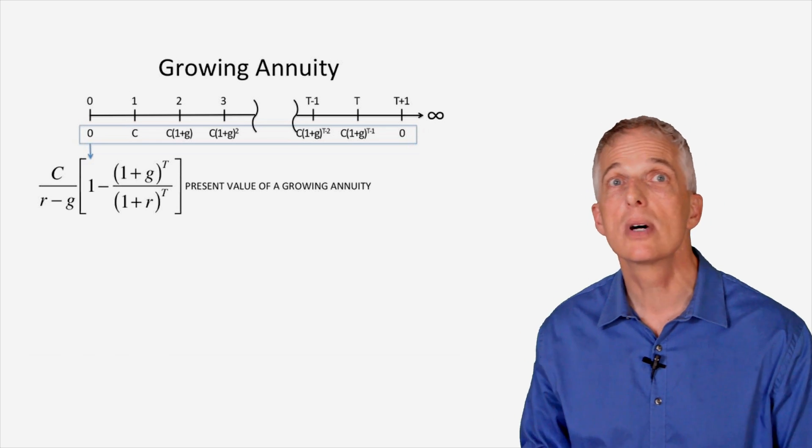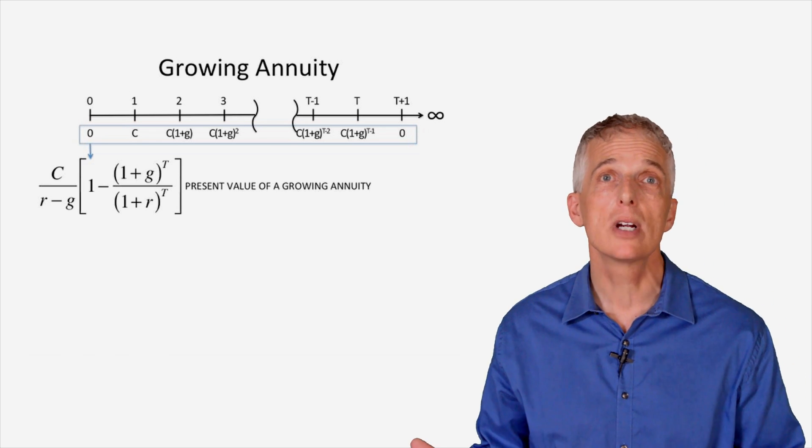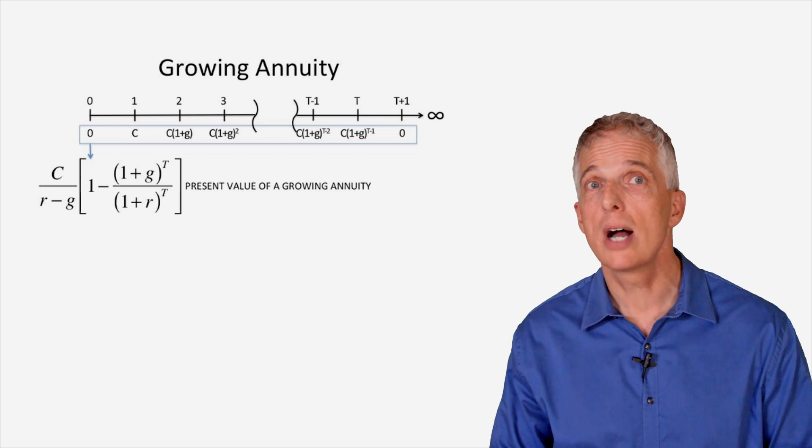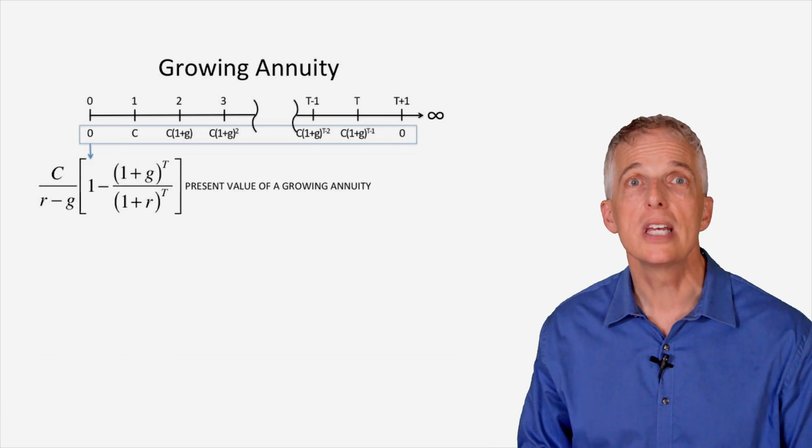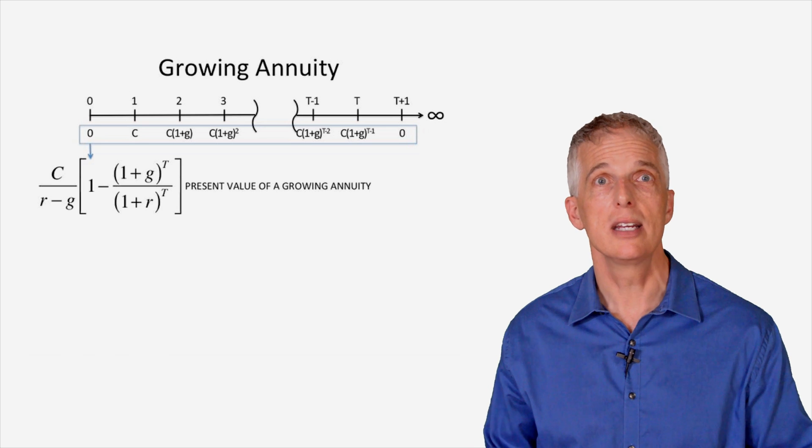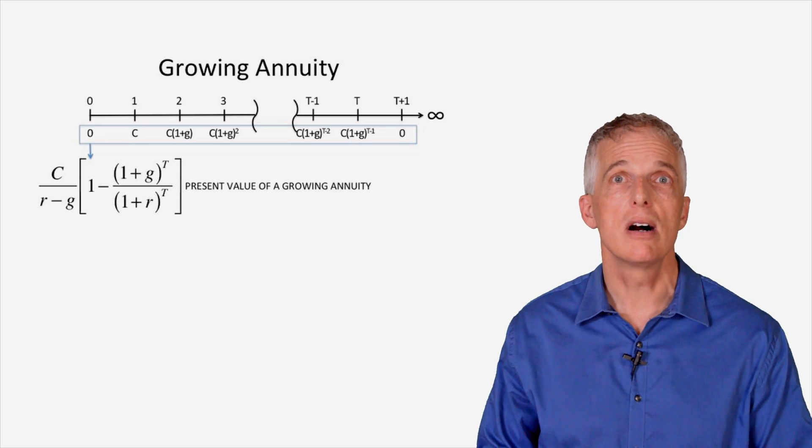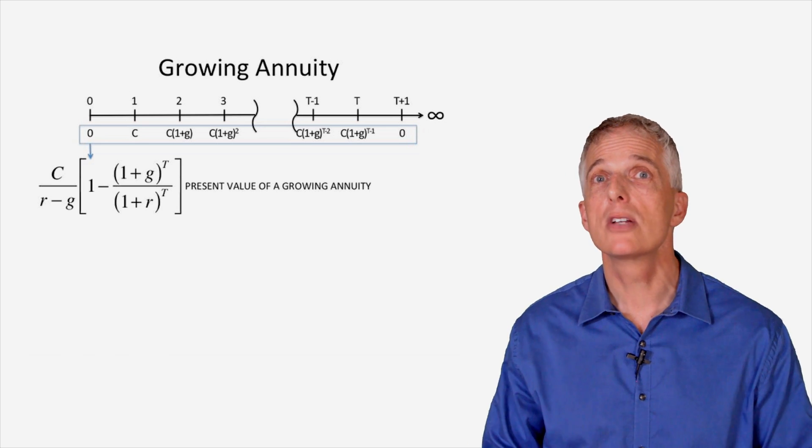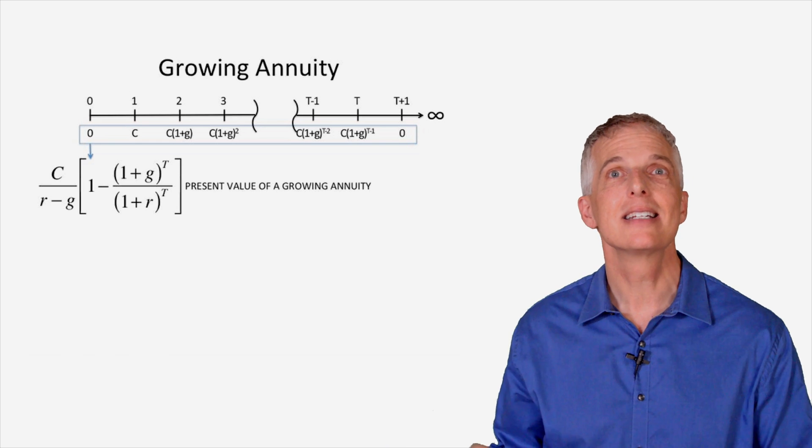Thus, to value a growing annuity, I need four inputs: the cash flow promised in the first period, C; the growth in that initial cash payment, G; the prevailing interest rate, R; and the number of periods over which the annuity will be paid, T.